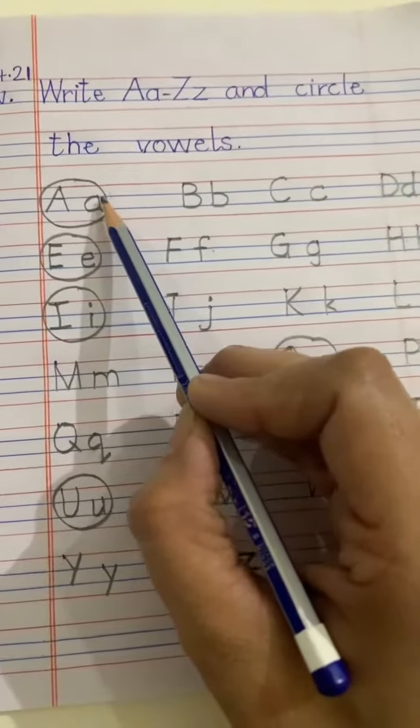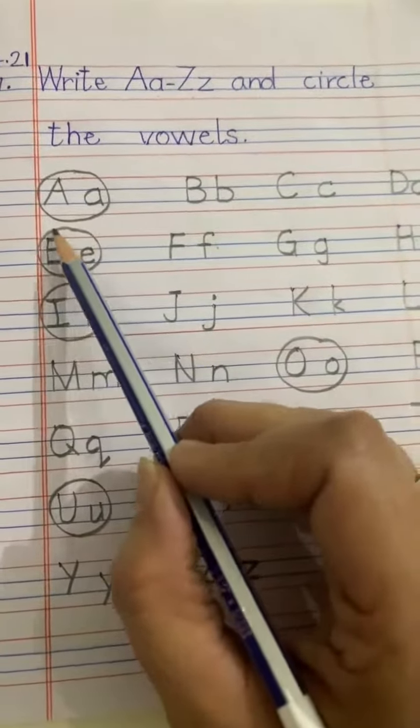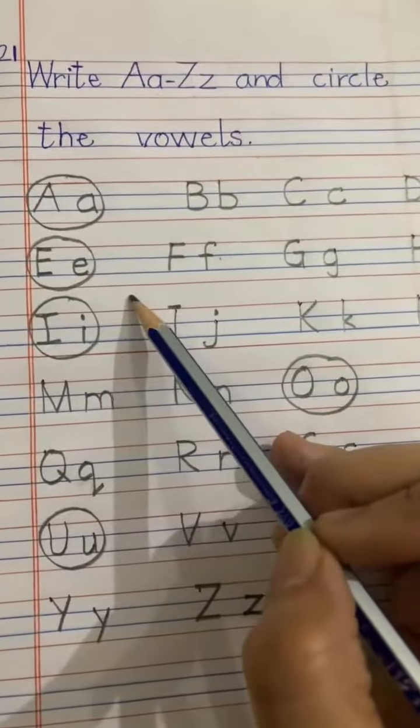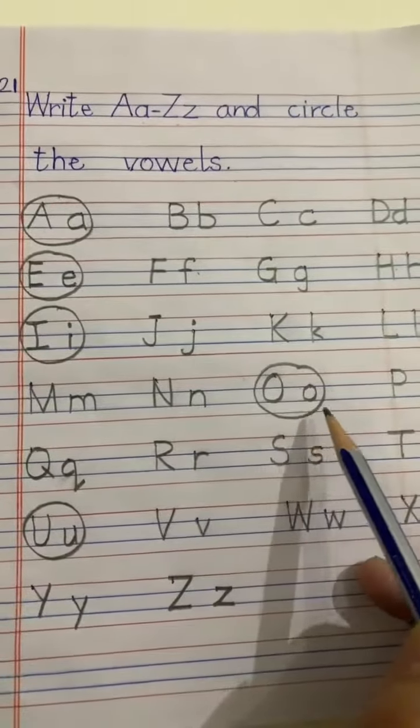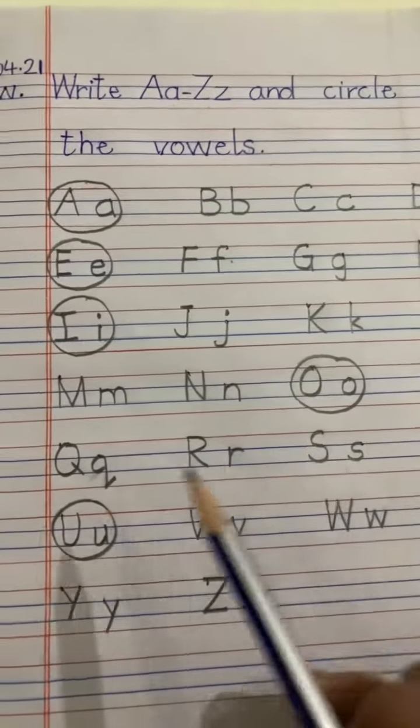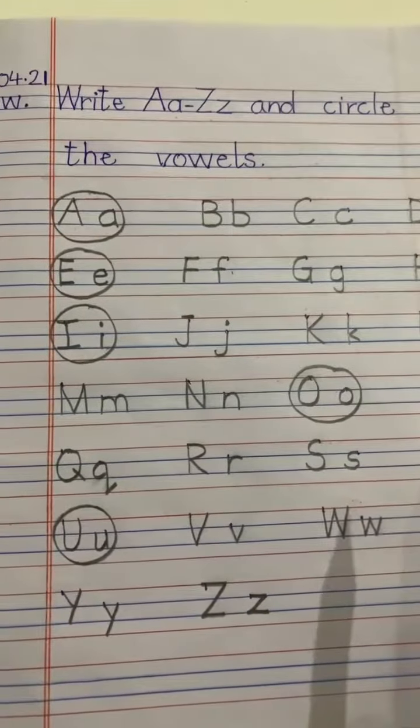Circle the A. A says A. E, E says A. I, I says E. O, O says O. U, U says A.